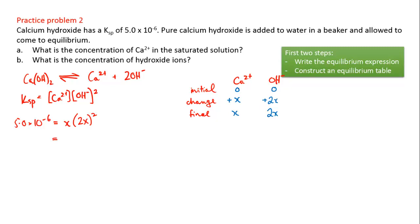Substituting into the K_sp expression: 5 times 10 to the minus 6 equals X times (2X)². Simplifying: X times 4X² equals 4X³. So 4X³ equals 5 times 10 to the minus 6. Solving this gives X equals 0.0107 moles per litre. Referring back to the equilibrium table, the concentration of calcium ions at equilibrium was X, so the calcium ion concentration is 0.0107 mol/L, which to 2 significant figures is 0.011 mol/L.